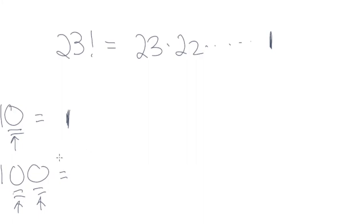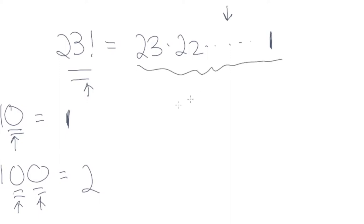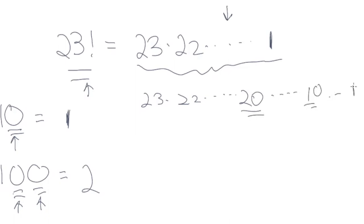So for 23 factorial, we just need to find how many factors of 10 exist in the product. That means finding how many numbers between 1 and 23 are multiples of 10. Counting through, we find 10 and 20 — so those two are factors of 10.